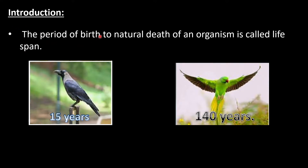The period from birth to natural death of an organism is called lifespan. One important thing is that the size of the organism is not related to lifespan. If you observe this diagram — crow and parrot have almost the same size, but crow lifespan is 15 years whereas parrot lifespan is 140 years.